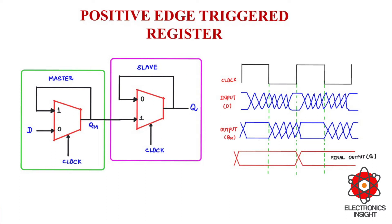We can observe this in the timing diagram. When clock goes low, the master stage output QM is going to be the same as the input data — the input data is exactly copied to the QM output. At the same time, when clock is low, for the slave stage, the final output Q is going to be stable for the entire duration of the clock signal.